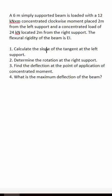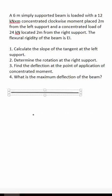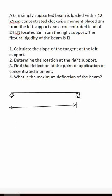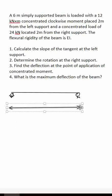Let's draw our simply supported beam. Here is our beam with a pin connection at the left support and a roller at the right. The total length of the beam is 6 meters. We will divide this into three equal segments of 2 meters each.